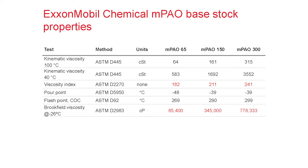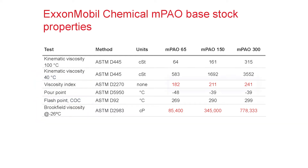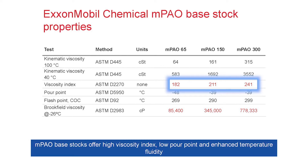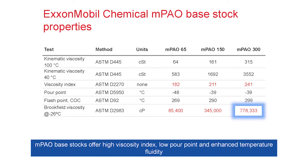On this slide, you see the main properties of MPAO. Note two key parameters: the low-temperature properties, reflected in the pour point and the Brookfield viscometrics, and the viscosity index. The high viscosity indices of MPAO make a substantial difference in certain applications. In addition, MPAOs have very good fluidity at low temperature. For example, at minus 26 degrees C, the MPAO 300 is still fluid, while other base stocks at that viscosity under those conditions are already frozen.